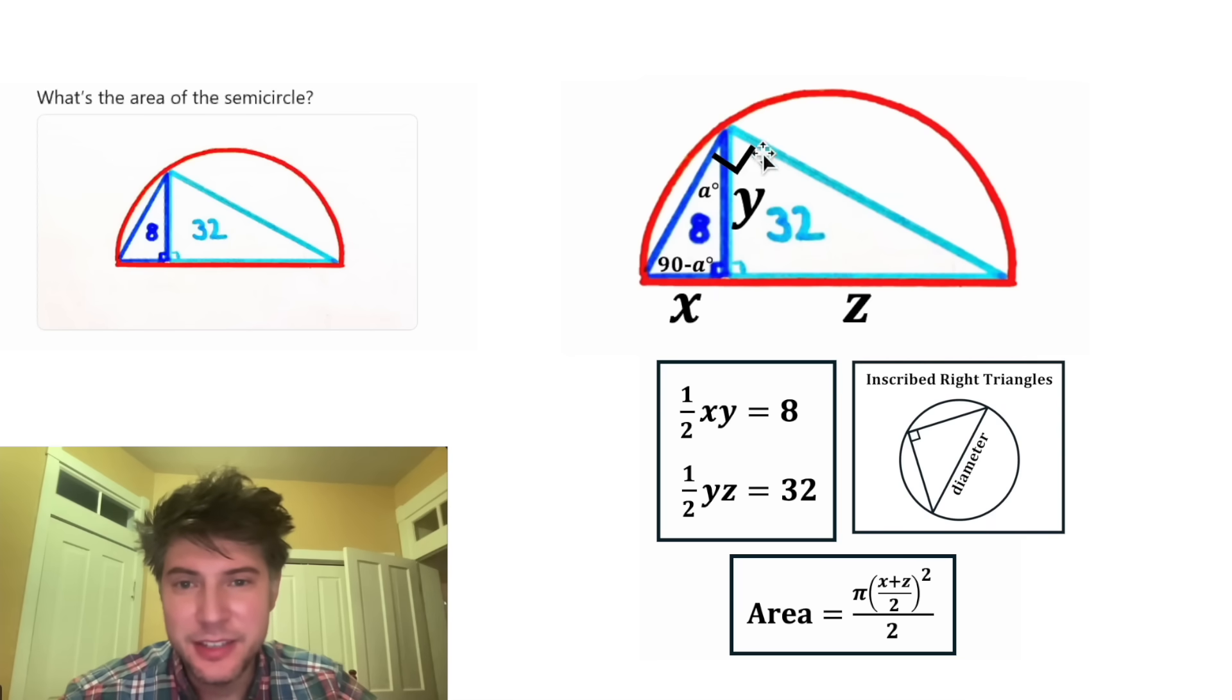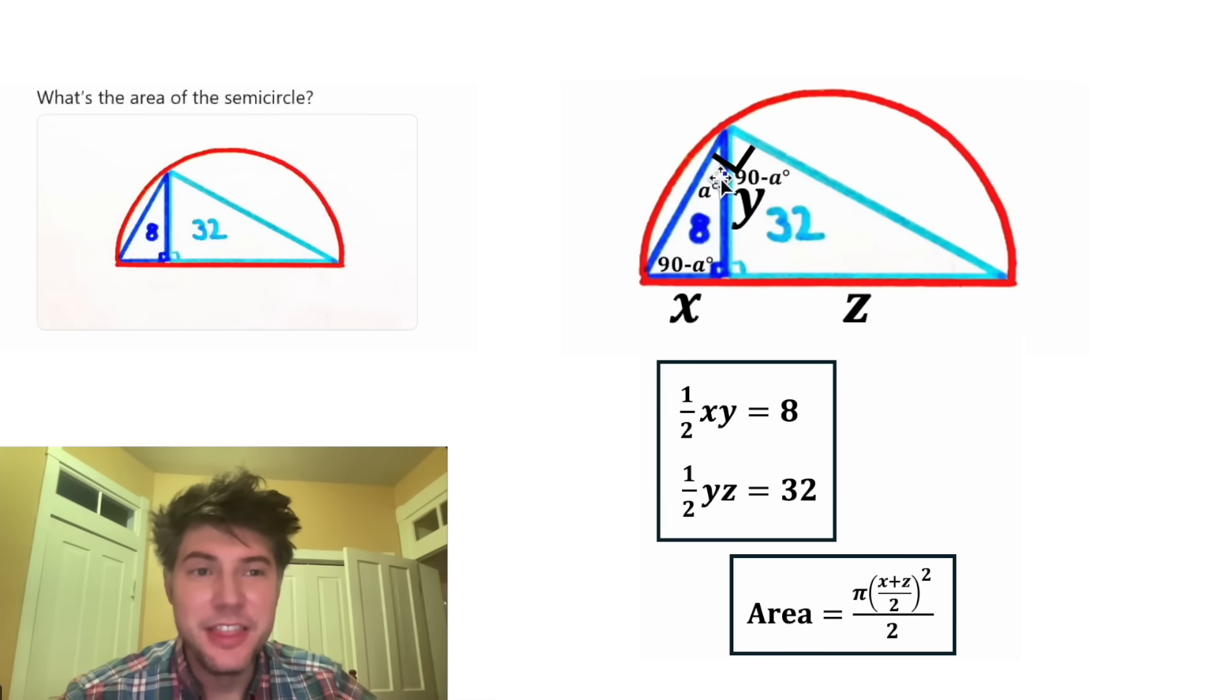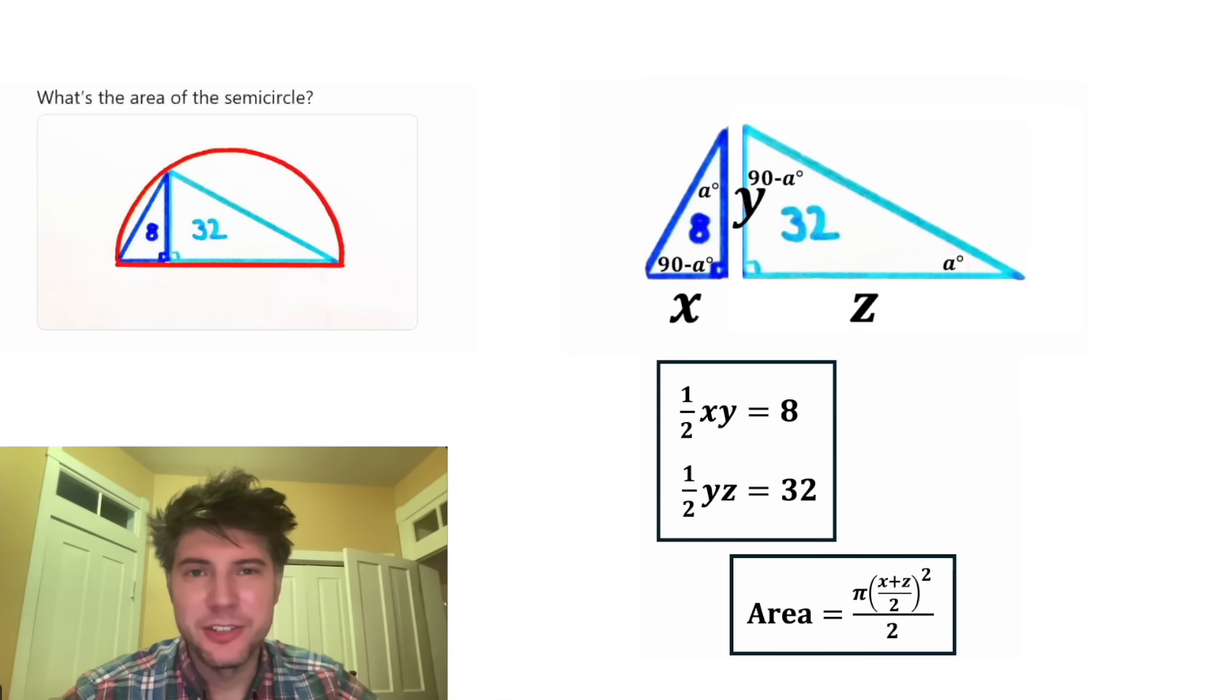Since this is A, this is 90 degrees. That makes this 90 minus A. And then in this right triangle, since this is 90 minus A, that makes this A degrees. So we have two triangles with three pairs of congruent angles. That means the two triangles are similar.